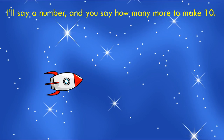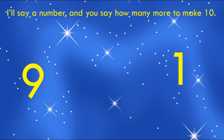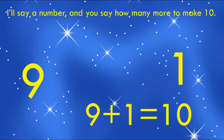Now in this next activity, I'm going to say a number and you are going to say how many more we need to make the next 10. Our first number is nine. How many more do we need to make the next 10? Let's see what our rocket ship says — one. Did you say one? Give yourself a kiss on the brain. Our number sentence is going to look like this: nine plus one equals 10.